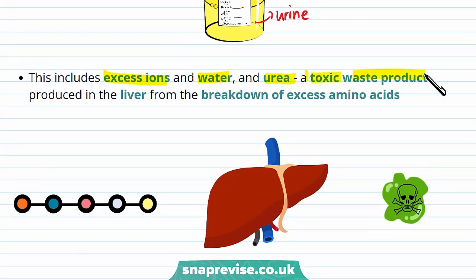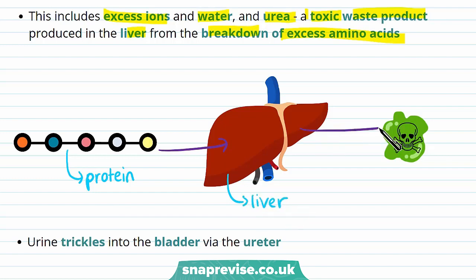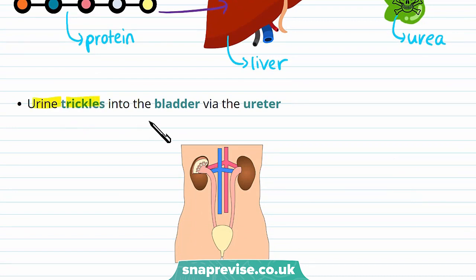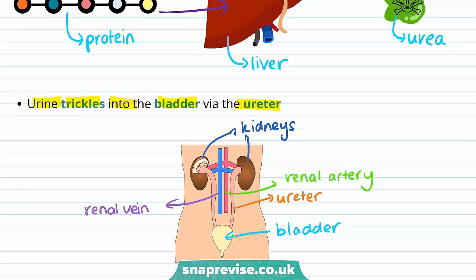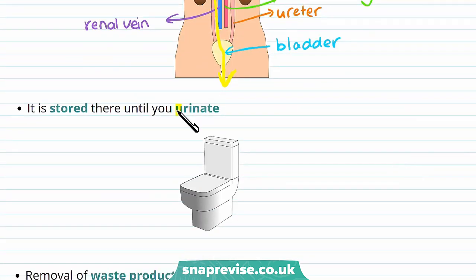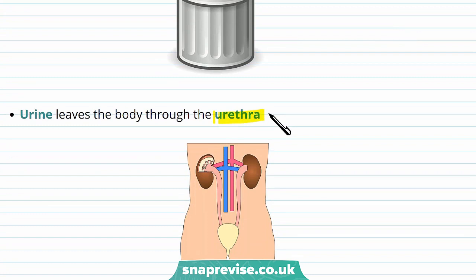Urea is a toxic waste product produced in the liver from the breakdown of excess amino acids. This protein is broken down in the liver into the amino acids that make it, and as a result urea is formed. As it's toxic, your body wants to get rid of it. This urea is found in urine that trickles into the bladder via the ureter. In this diagram we can see the kidneys, the bladder, and the ureter tubes. The renal vein and renal artery are also visible. Urine moves from the kidneys down through the ureter, into the bladder, and out of the body, where it is stored until you urinate.